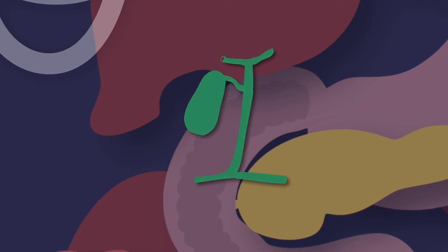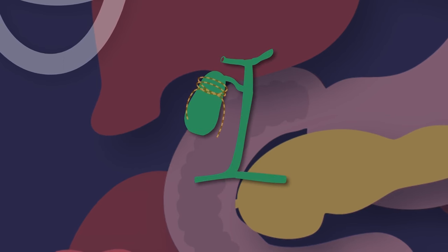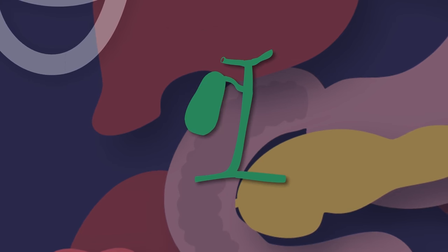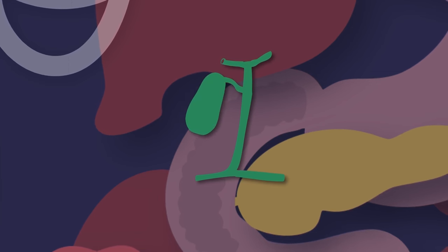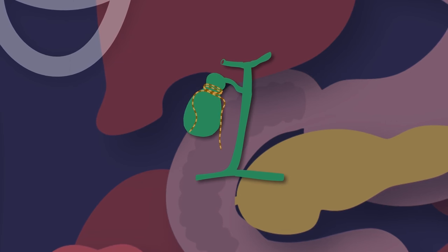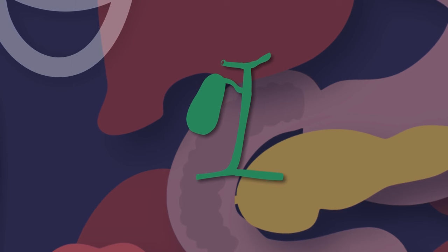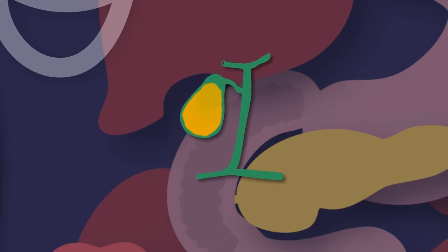I am your gallbladder. I am a sac-shaped organ, you see. I am a gallbladder. Your liver stores its bile in me. I am your gallbladder. I am a sac-shaped organ, you see. I am a gallbladder. Your liver stores its bile in me.